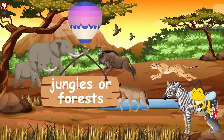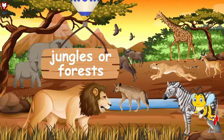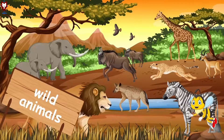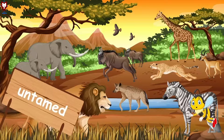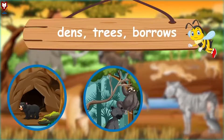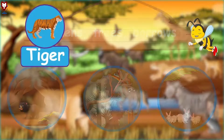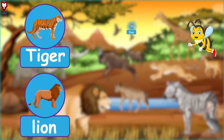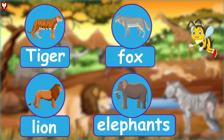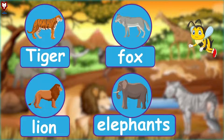We can also find many animals in jungles or forests. They are called wild animals. They are untamed and live in dense trees, burrows, or in the wild. Tigers, lions, foxes, and elephants are wild animals — they are very dangerous. You can see some tamed wild animals in the zoo.